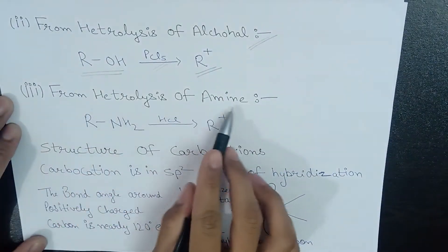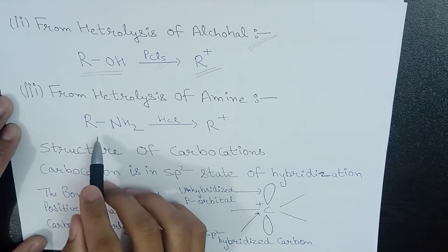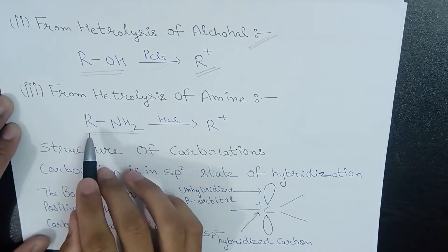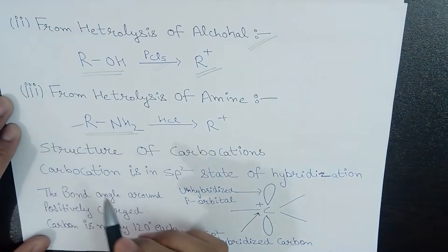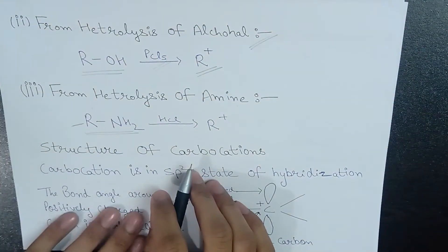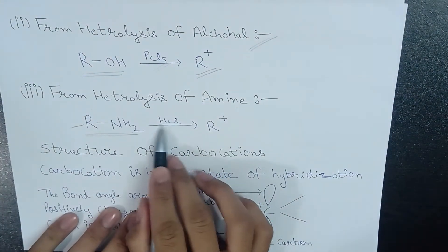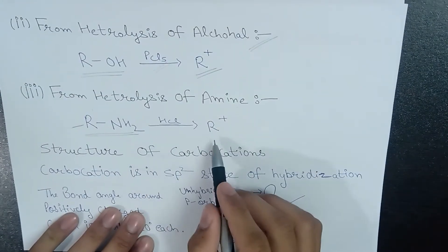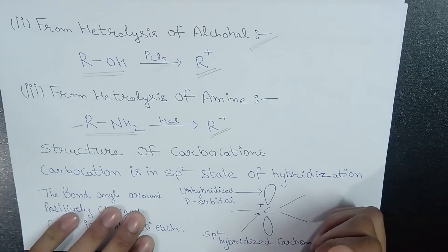From heterolysis of amine, we're considering amine in the form R-NH2, where R is the carbon chain. In the presence of HCl, this amine will become a carbocation.